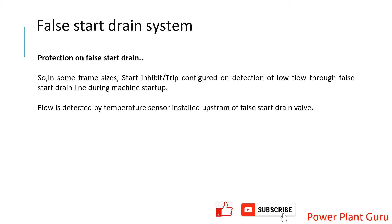Normally, the logic is different for different machines — when you have a false start, how much trip or inhibit time will be there varies. There are some machines where the false start drain valve must have a sensor to detect whether fuel or fluid is coming out. Advanced machines may have this kind of sensor, but it is not available in many machines. In those cases, the field operator and engineer has to physically judge and witness the compressed air and fuel coming out from those valves.